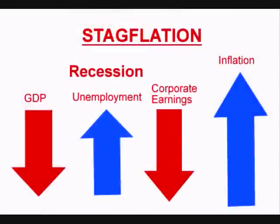The next term worth mentioning is stagflation. Stagflation occurs when there is slow economic growth, known as stagnation, at the same time as inflation. So the economy is doing poorly, meaning that spending is down, which should be causing prices to drop, like in deflation. But instead, prices are rising, which is usually caused by some sort of shock in supply. For instance, an example of stagflation was in the 1970s when oil prices rose during a recession.